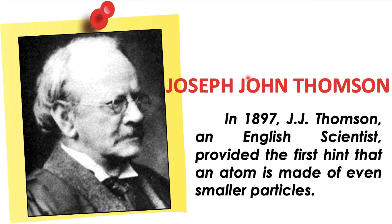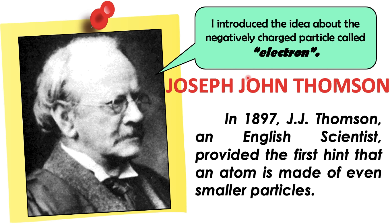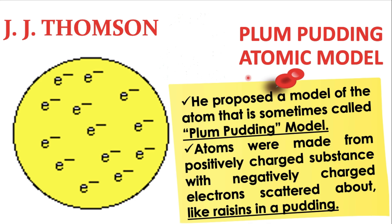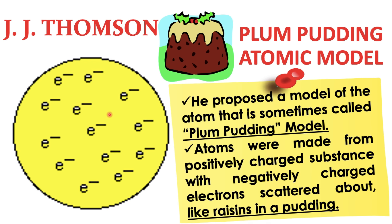Joseph John Thomson. In 1897, J.J. Thomson, an English scientist, provided the first hint that an atom is made of even smaller particles. He introduced the idea about the negatively charged particle called electrons. His model is also known as the plum pudding atomic model. According to him, atoms were made from a positively charged substance with negatively charged electrons scattered about, like raisins in a pudding.